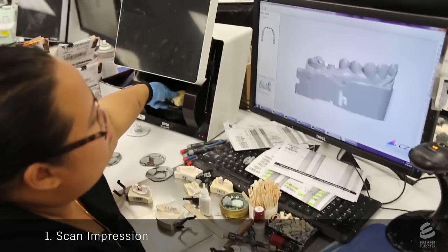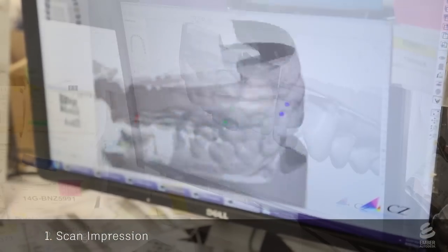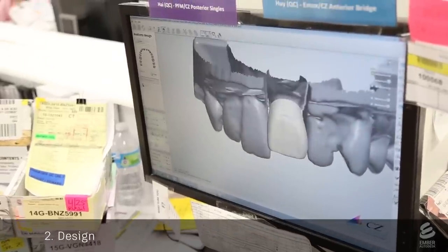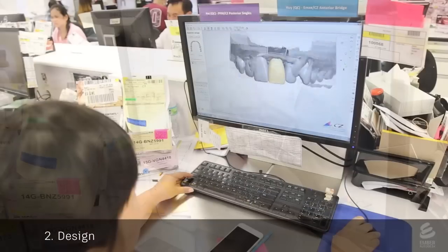They start by 3D scanning a dental impression, which yields a 3D mesh of the patient's mouth. A dental technician inserts a model crown into the mesh of the mouth. They use specialized software to orient and size the crown.